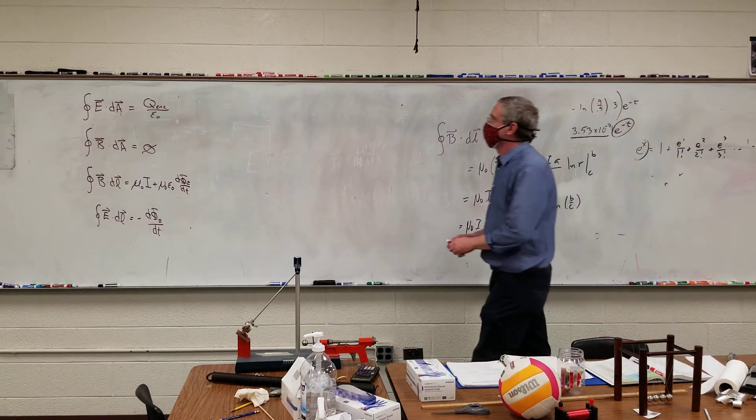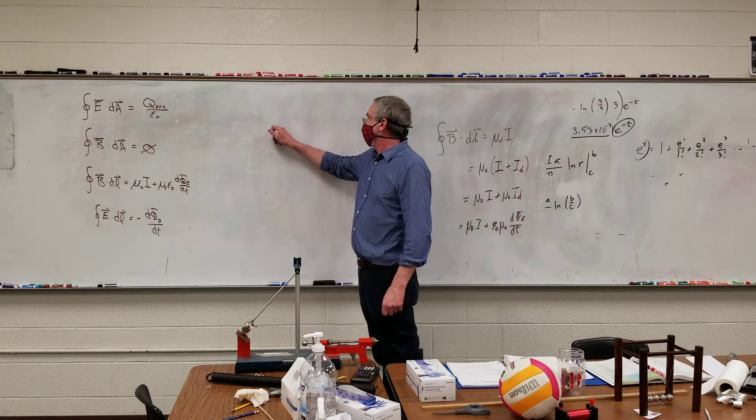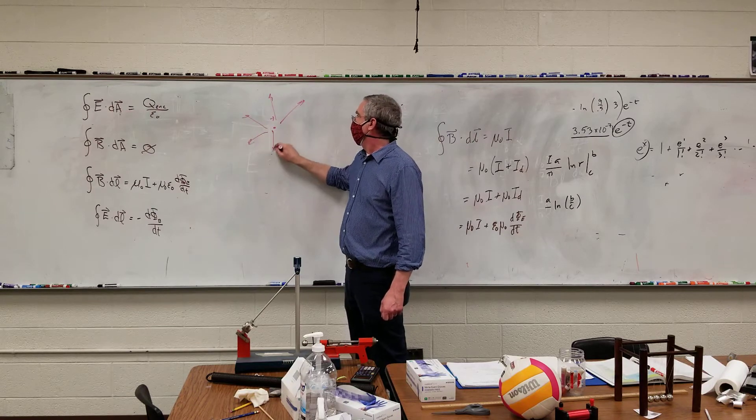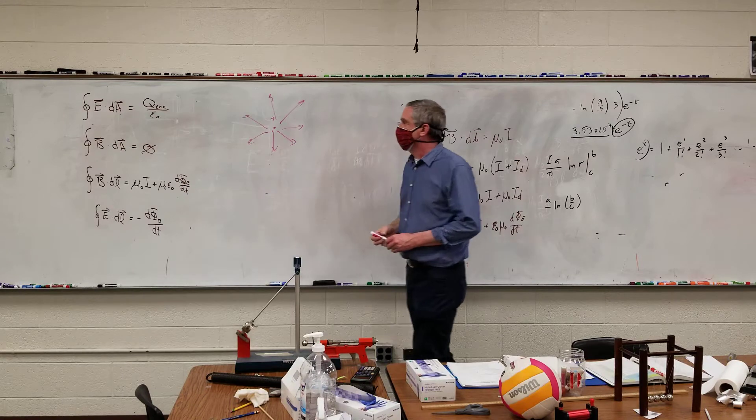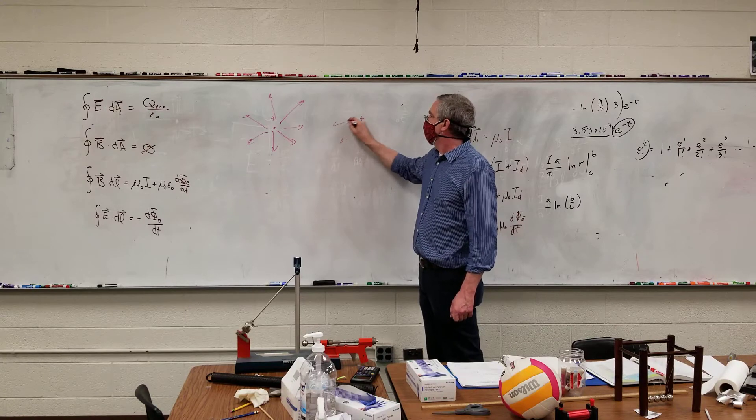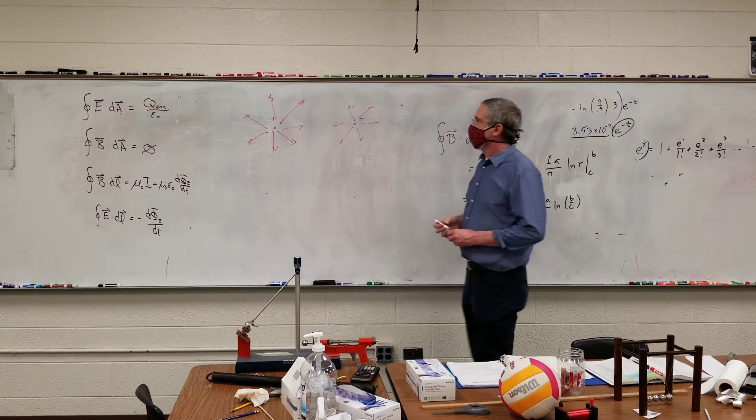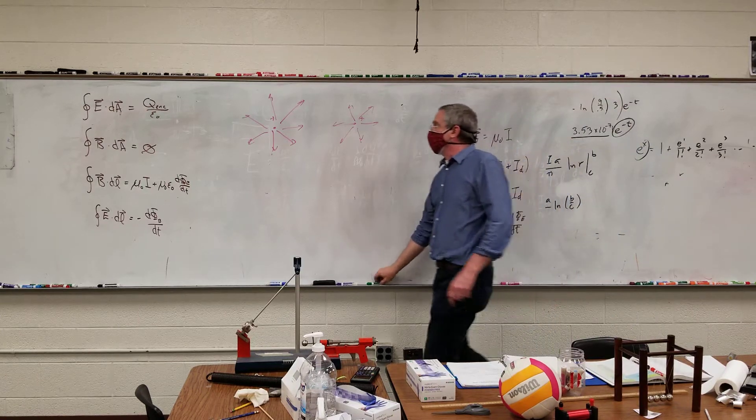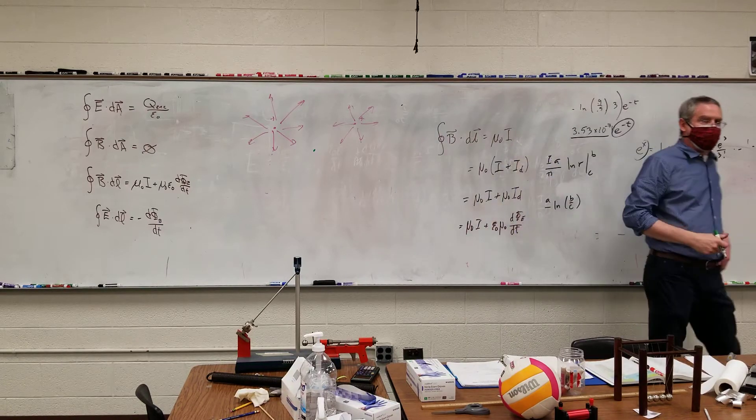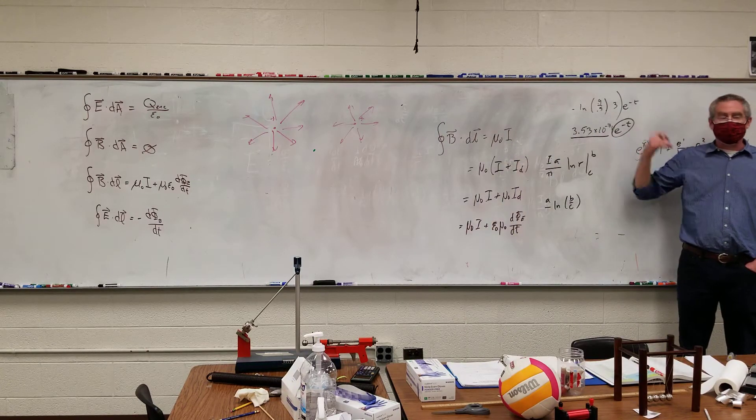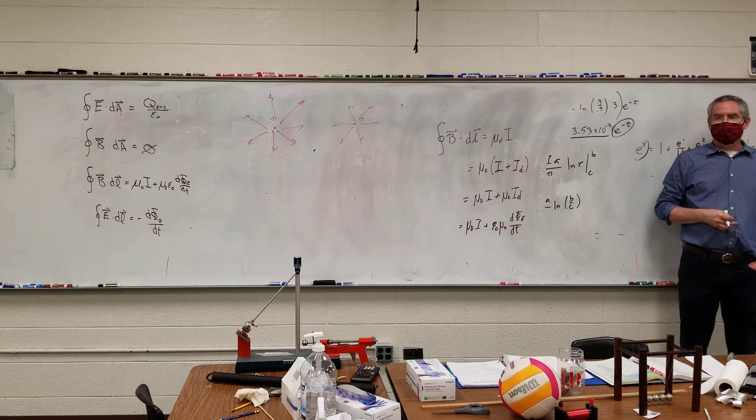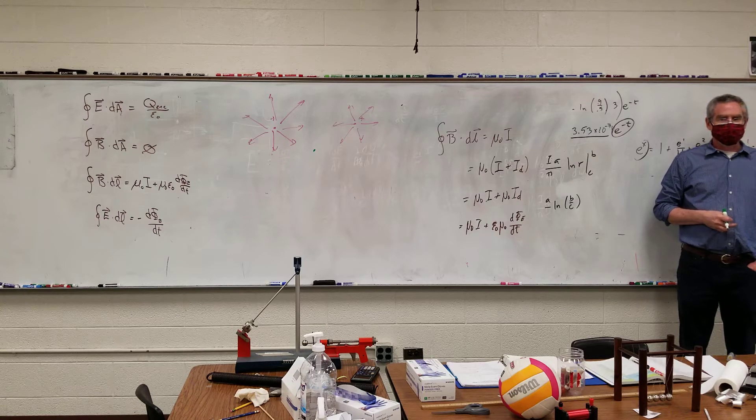But more importantly, the implications of this. I have a charge here, the electric field goes away from it. I then move the charge to here. So imagine that you are sitting at a point here. What can you tell me about the electric field at that green dot when the charge moves from left to right?